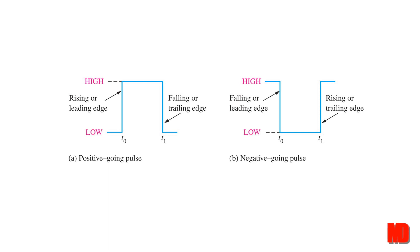So looking at the positive going pulse, the first part of the waveform that passes through at T0 is on the left side. So this is called the leading edge.